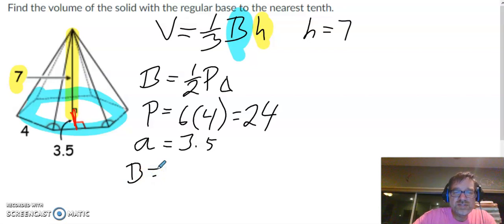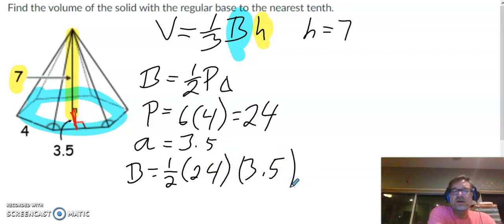So area of the base is going to be one-half times 24 times 3.5. I'm going to get out my calculator and put all of that in. So 12 times 3.5.